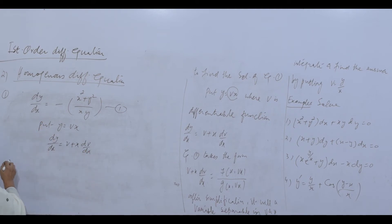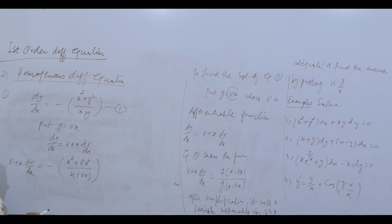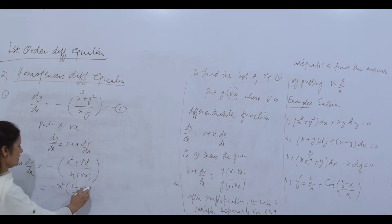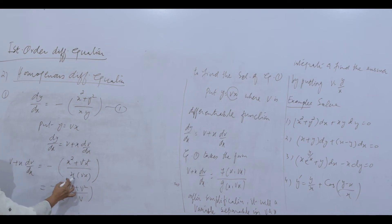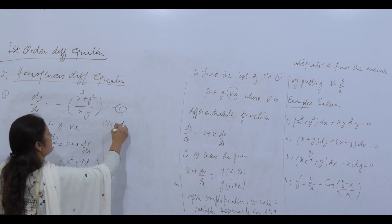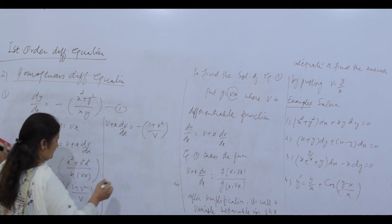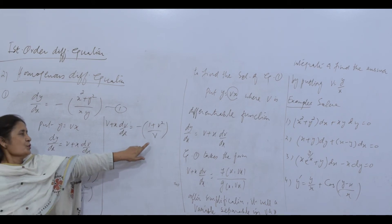Equation (1) becomes: v + x·dv/dx = −(x² + v²x²)/(x · vx). Factor out x² from the numerator and x² from the denominator; they cancel. We are left with v + x·dv/dx = −(1 + v²)/v.